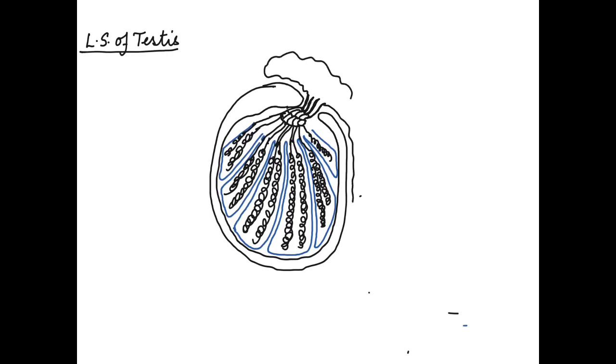That is the epididymis, the head and the tail, and then that forms the vas deferens. So now we have completed the drawing of the LS of testes. Let us label it now.